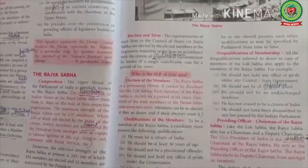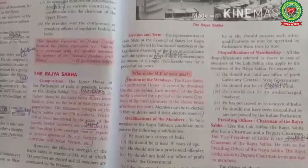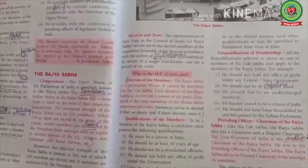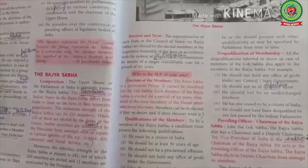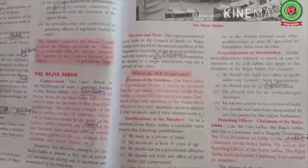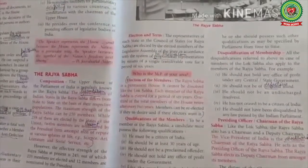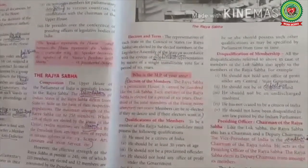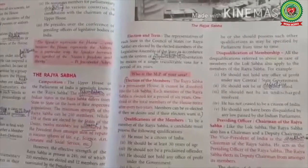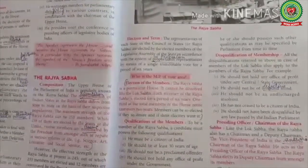Every member of the Rajya Sabha has a term of 6 years. Every 2 years, the tenure of one-third of its members ends and new members take their place. These members are elected by the members of state legislative assemblies. Rajya Sabha is a permanent house and its members can be re-elected.